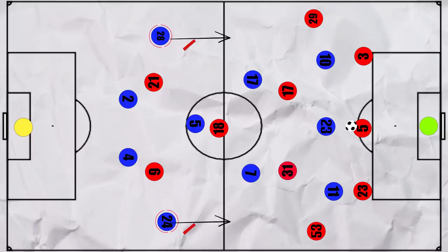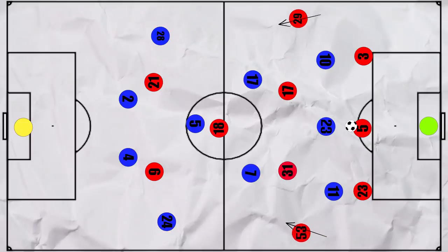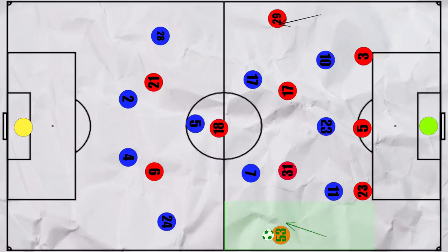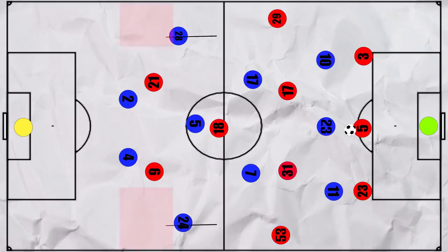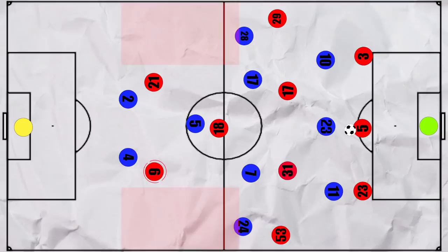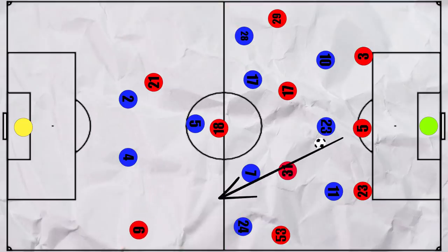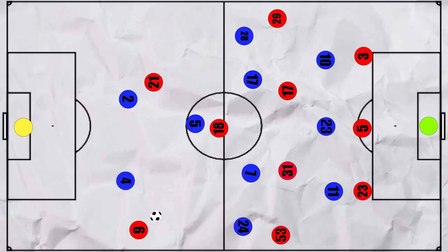If Chelsea's full backs didn't back up the press, United would simply recycle the ball wide to give their full backs time on the ball. But often Chelsea did push their full backs higher, and in these cases Martial would often pull wide to the left to look to receive a long pass from Harry Maguire to isolate him against the centre backs, which they managed to do at times.